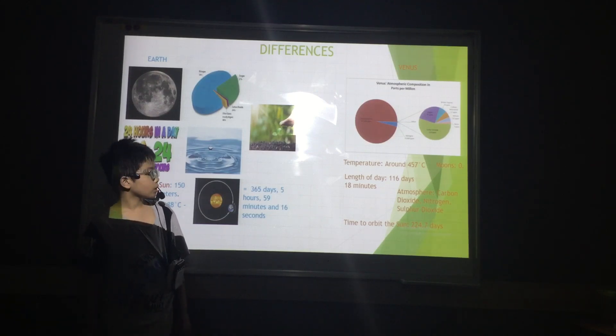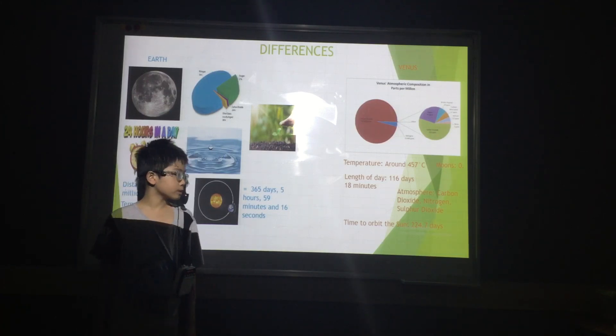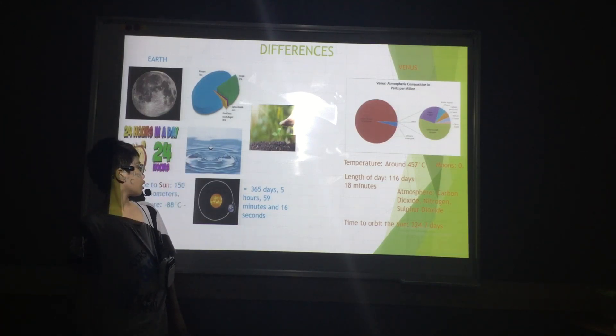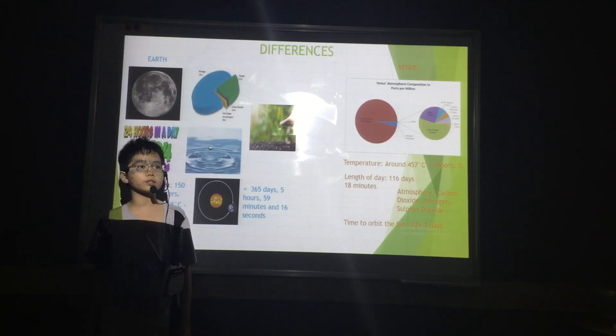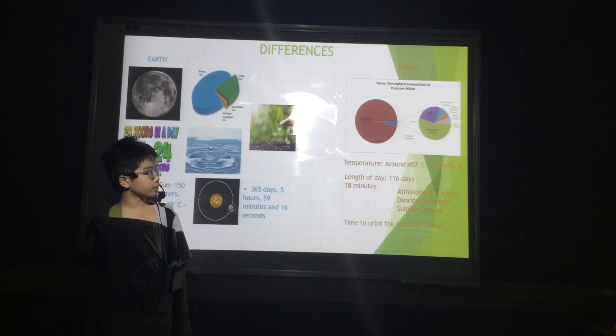The time that it takes Venus to orbit the sun is 224.7 days. The temperature of Earth is minus 88 degrees to 18 degrees, but Venus's temperature is around 475 degrees.